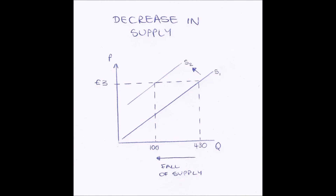Also, the availability of resources: if resources aren't available then less will be produced because these goods cannot physically be produced, and therefore supply will decrease. Additionally, the price of other goods matters — for example, if I need leather to produce my good and the price of leather goes up, it's going to cost me more to produce my good. Therefore my profit margin decreases, firms exit the market, there are fewer people producing the good, and supply decreases.